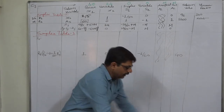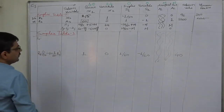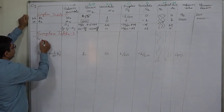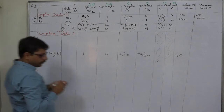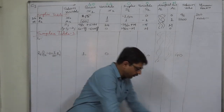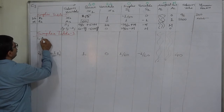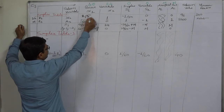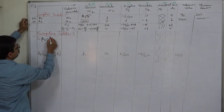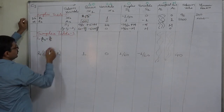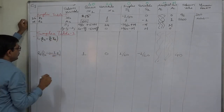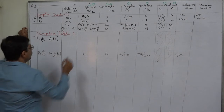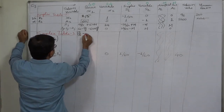Now it is the turn of the first row of the new table, R5, which will take the place of R3. The formula is: old row R3 minus the element in the key column for that row (which is 2/5) multiplied by the replaced row R6. So R5 = R3 − (2/5) × R6.